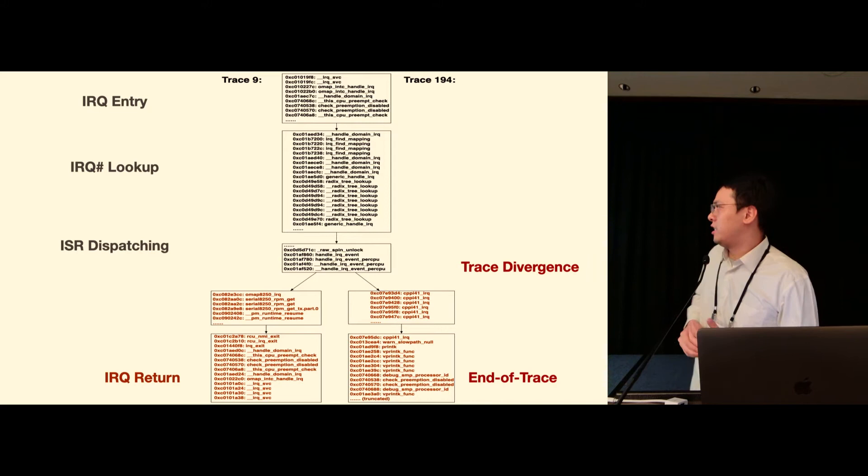Here's a more concrete example for two traces that is handling two different IRQs. We can see that both of the traces share a fair amount of code starting from an entry point, and eventually they diverge right after the dispatching point.